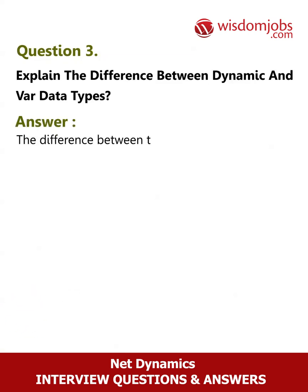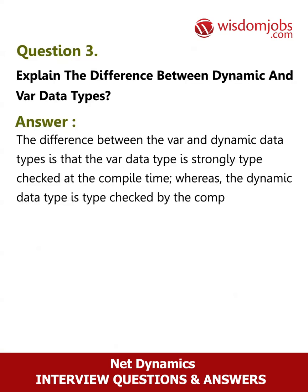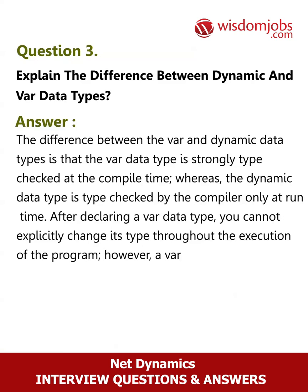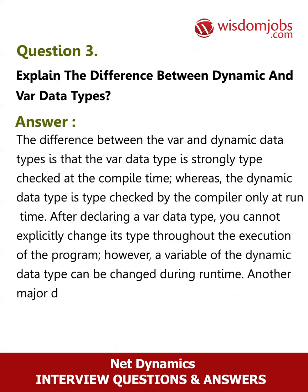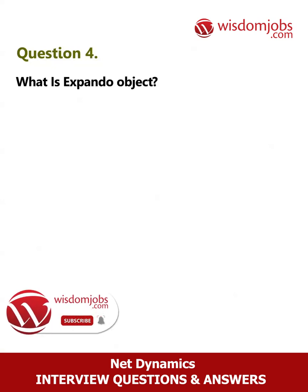Question 3: Explain the difference between dynamic and var data types. Answer: The var data type is strongly type-checked at compile time, whereas the dynamic data type is type-checked by the compiler only at runtime. After declaring a var data type, you cannot explicitly change its type throughout execution. However, a variable of dynamic type can be changed during runtime. Another major difference is that the dynamic type can also be used as the return type for methods, which var cannot.